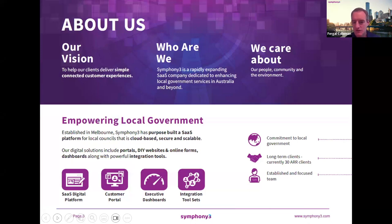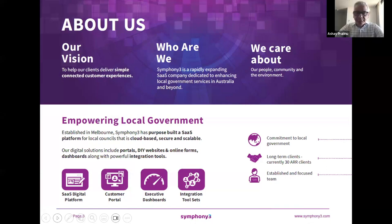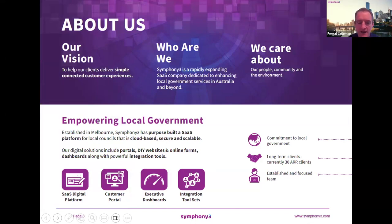A little bit about Symphony 3. Most of you on the call will probably know of us — a rapidly expanding SaaS company very much dedicated to local government services. Three elements to what we do: digital enablement, which is all about helping councils get up and running with portals, forms, executive dashboards, and full websites. We then have our smart glue, which is all about integration toolsets that allow councils to connect their 40 or 50 systems together to get automation and optimisation. And alongside that, we have an advisory business where we help councils navigate digital transformation and everything that comes with that.